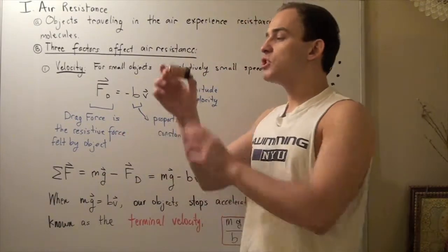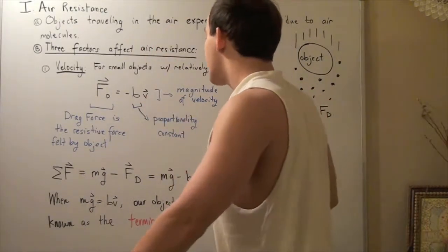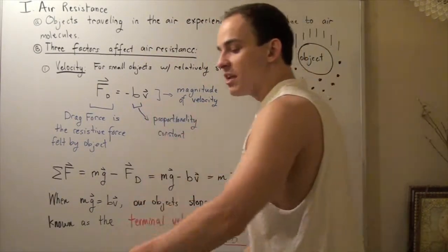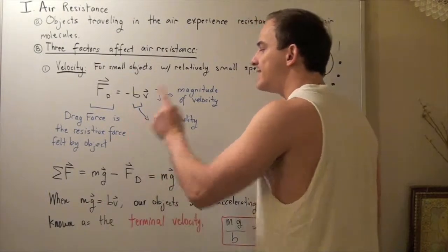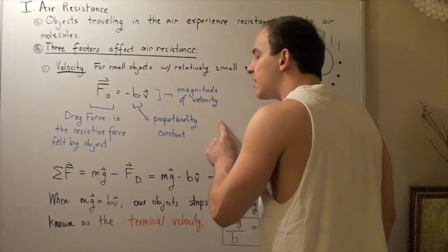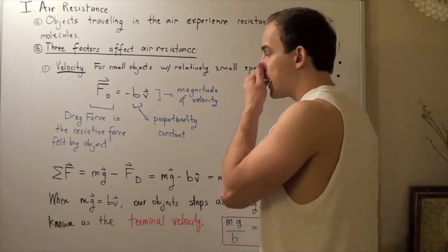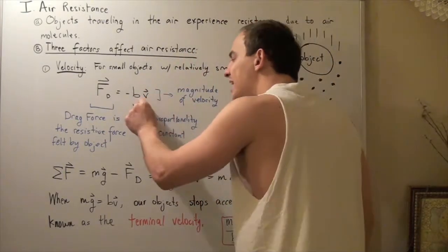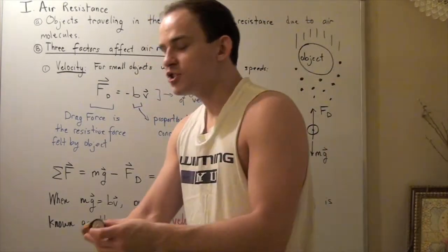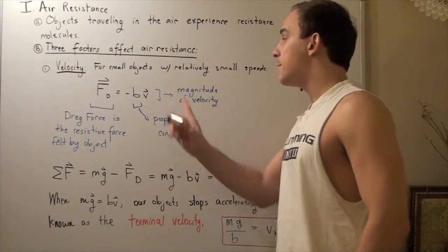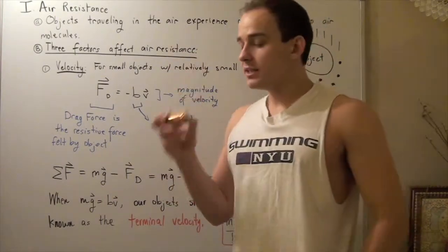In this example, when our object was moving downward, the force of the molecules exerted on it was in the opposite direction. The velocity in the formula represents the magnitude of the object's speed traveling through the air. B is simply a constant — the proportionality constant — and it depends on the viscosity of the fluid or gas. What this formula states is: the higher our velocity, the more drag force our object feels. So if this battery is traveling with a higher speed, the air molecules exert a larger drag force.